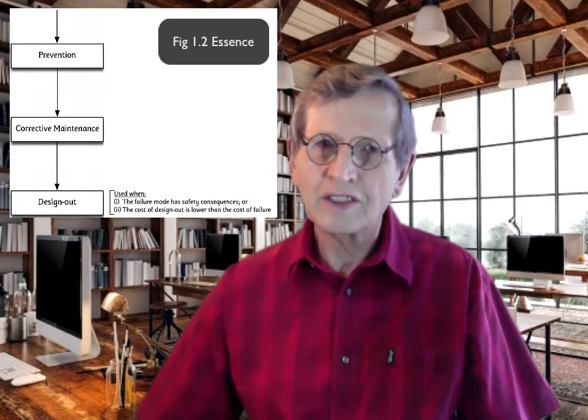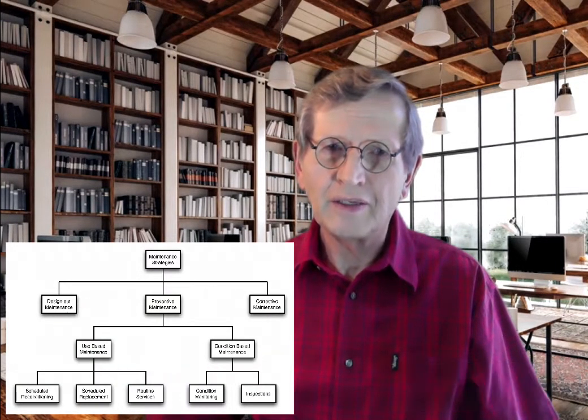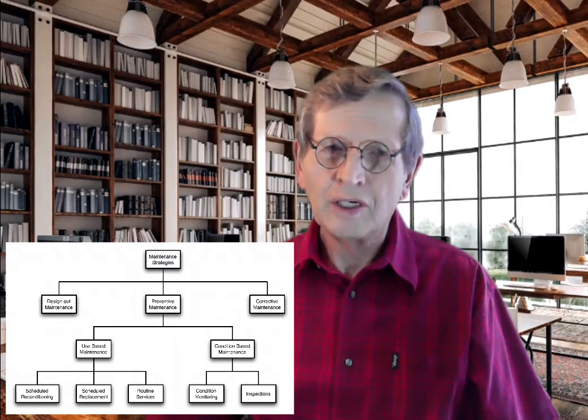See the essence of the RCM process summary of figure 1.2, which is now shown here. Let us now visit each of the three main strategy options and their subdivisions. First, preventive maintenance. Preventive maintenance can either be of the use-based or the condition-based variety. All maintenance strategies aimed at preventing failure from occurring or limiting the negative effects of failure are of the class preventive maintenance.